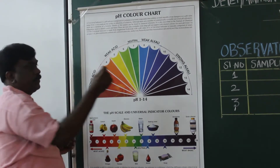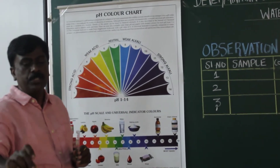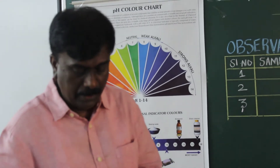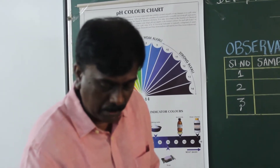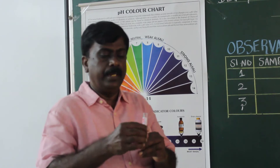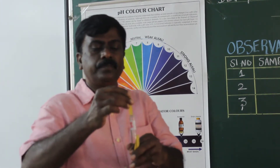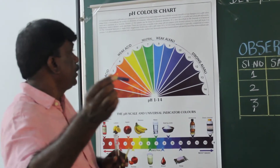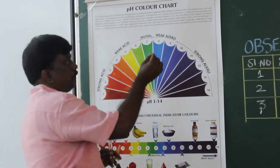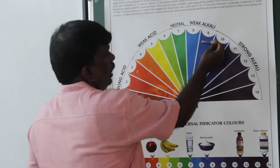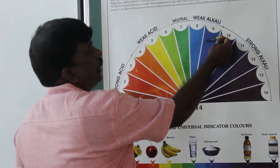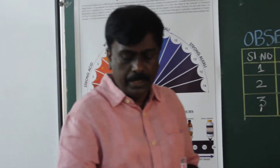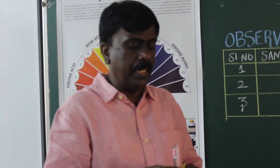From this we are able to identify that the solution from letter 1 is acidic. Then take sample 2 from the test tube, dip the pH paper, and observe the blue color. Compare it with the chart and we get pH 9. That means solution 2 is alkaline.